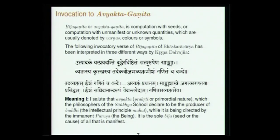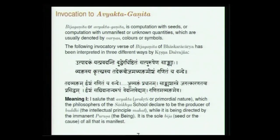In the first verse of Bijaganita, Bhaskara does an invocation to Avyakta — Avyakta ganita. It is a beautiful verse with three different meanings. Avyakta can be thought of as the Prakriti or primordial nature in Sankhya philosophy, as Krishna or the Parabrahma as known in Vedanta, or as Avyaktaganita — mathematics done with unmanifest quantities, i.e., algebra. Krishna Ravajan's commentary says: Avyaktam vande, Isham vande, Ganitam ca vande — three invocations made in a single verse.